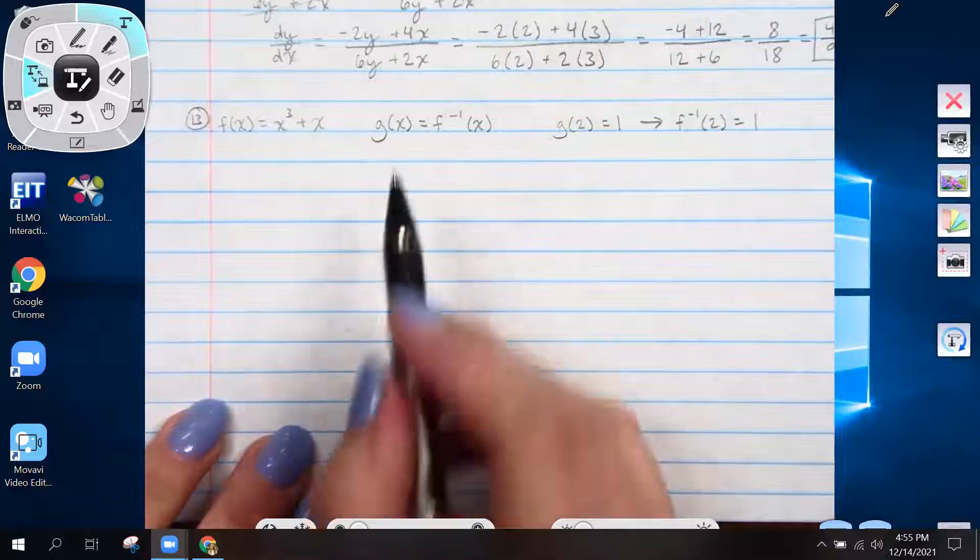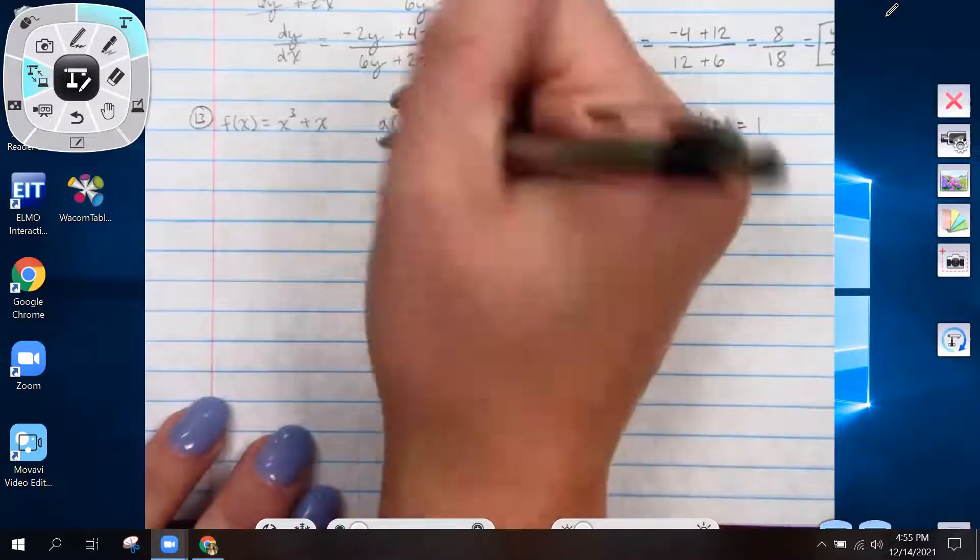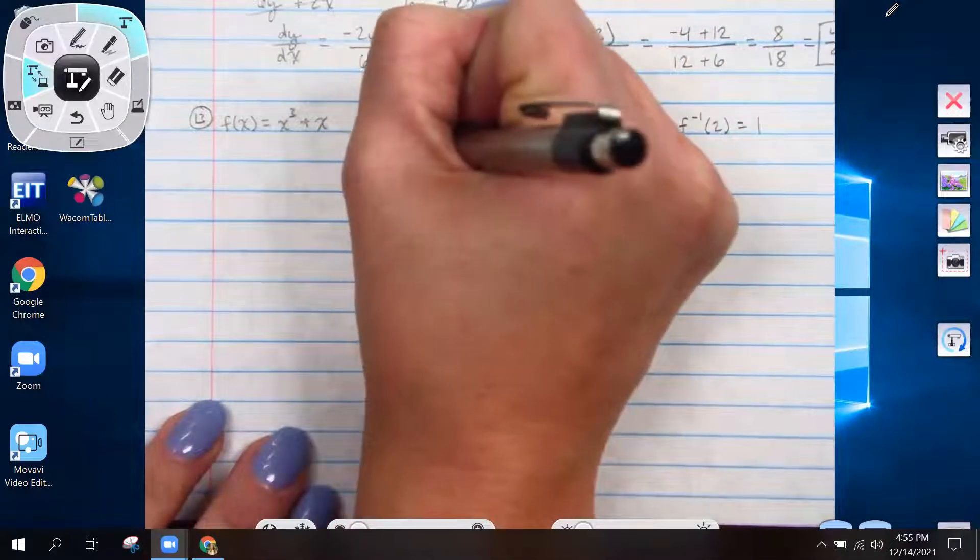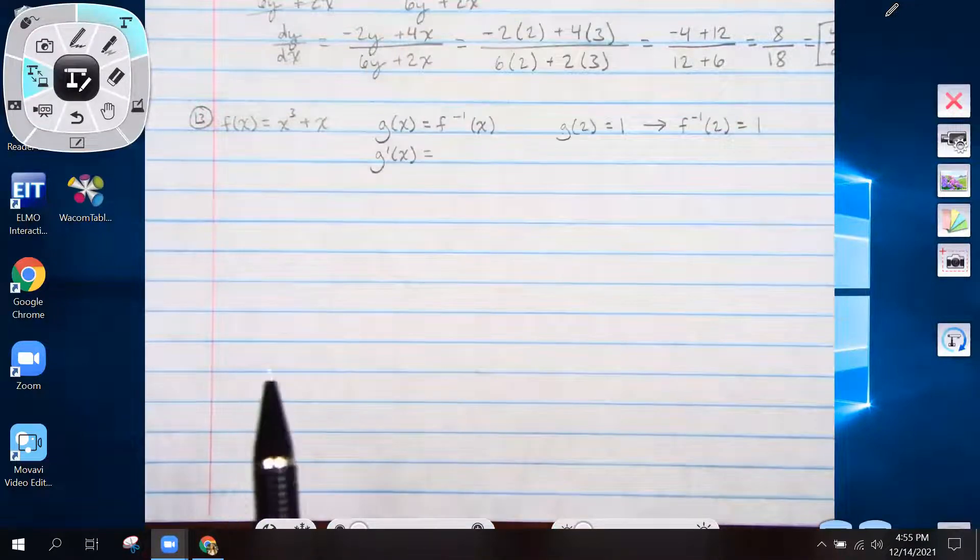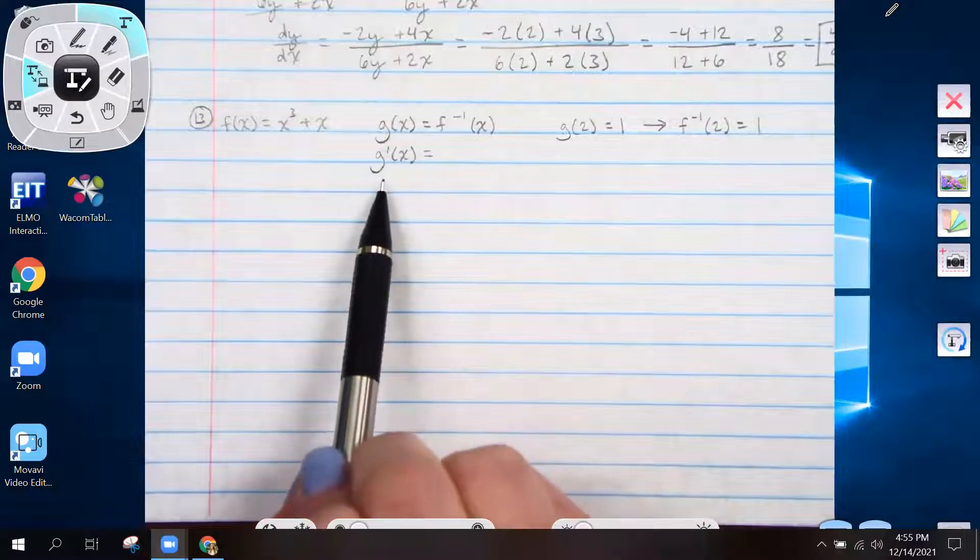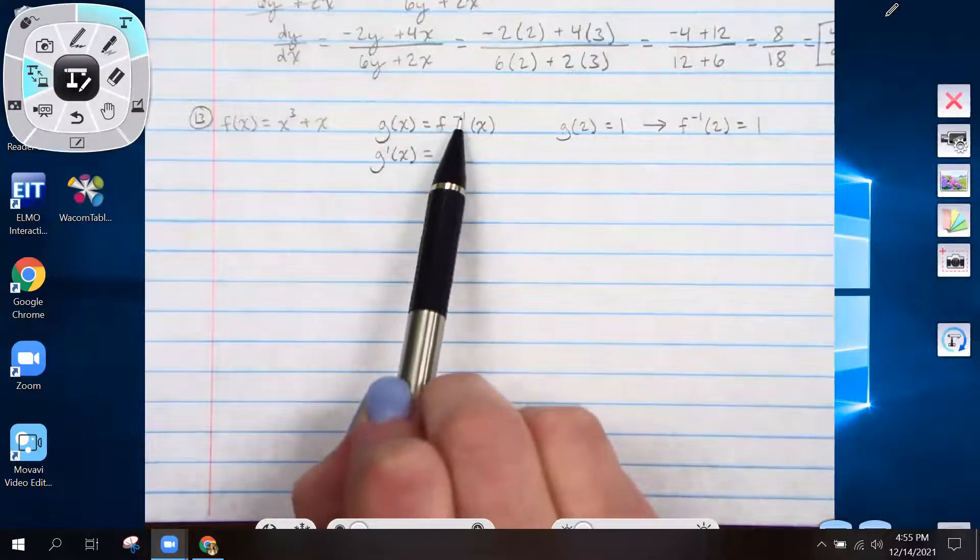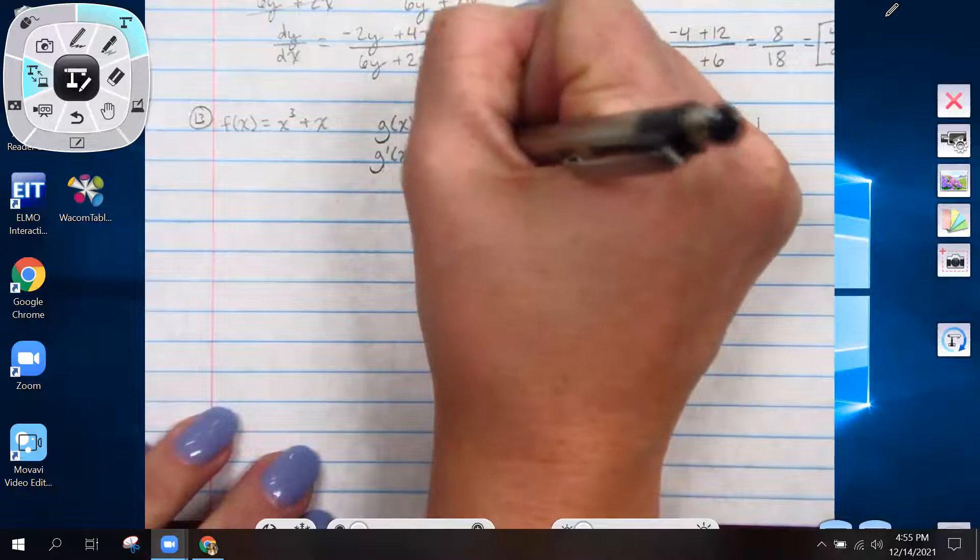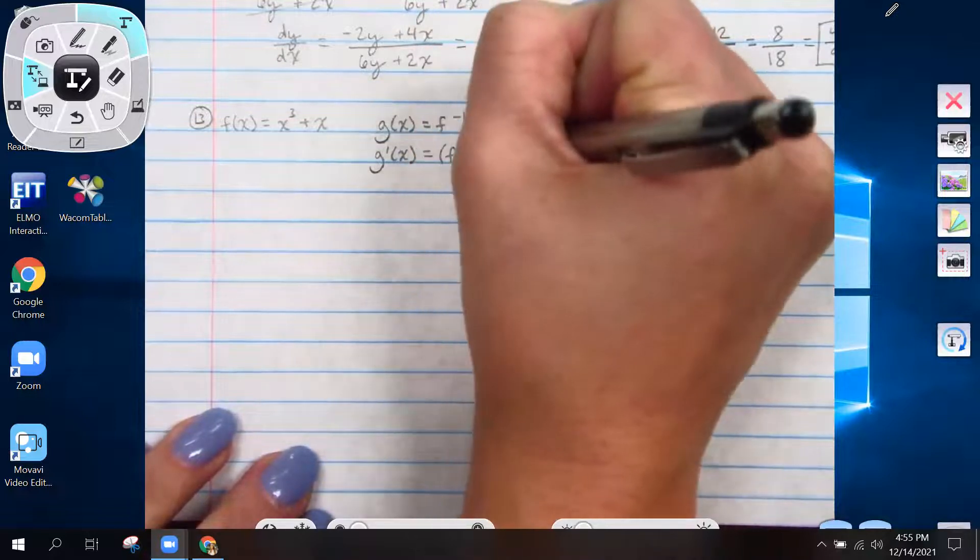So to go about finding g prime of 2, we first need to just take g prime of x. So if we take the derivative of g to get g prime, the derivative of f inverse would be f inverse prime of x.